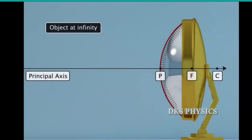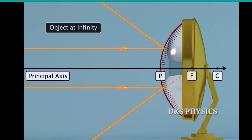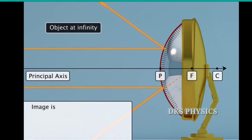For a convex mirror, when the object is at infinity, the parallel rays from the object converge at the principal focus. Thus, the image is formed at F and is virtual, erect, and highly diminished.